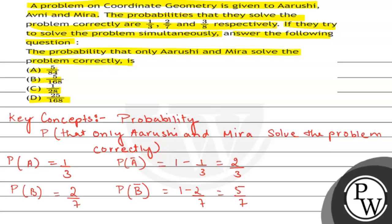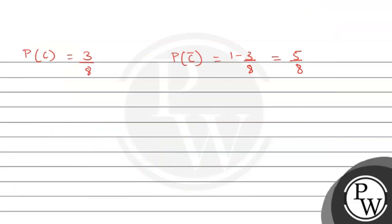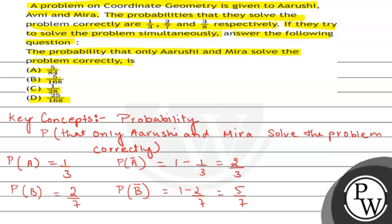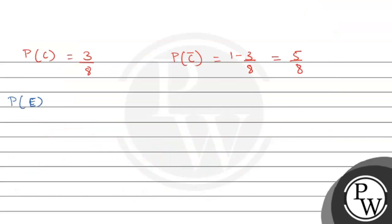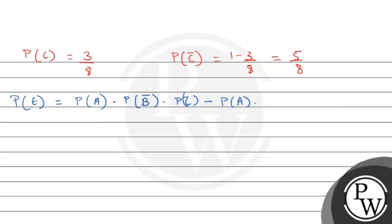Now we have to find the probability that only Aryoshi and Mira solve the problem correctly. The probability of event E equals P(A) multiplied by P(B not) multiplied by P(C), minus P(A) multiplied by P(C) multiplied by P(B not).